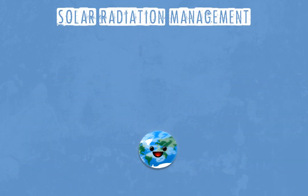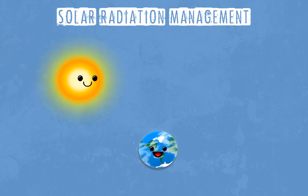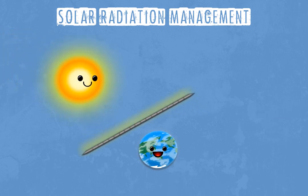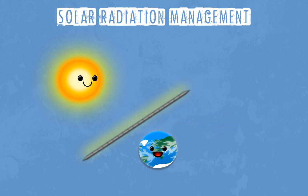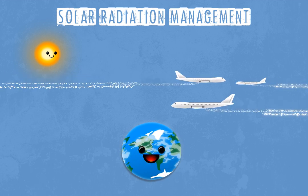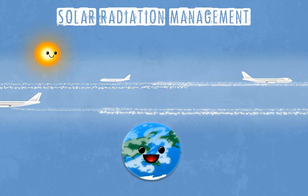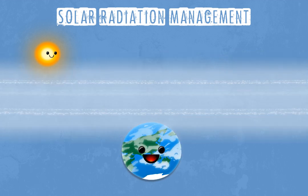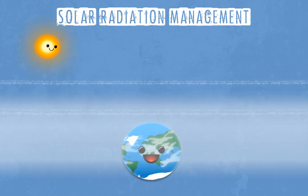The second technology is solar radiation management, which seeks to reflect sunlight and thus reduce global warming. Proposed examples include the creation of stratospheric sulfate aerosols — basically particulate matter that floats in the upper atmosphere, blocking the sun's rays.